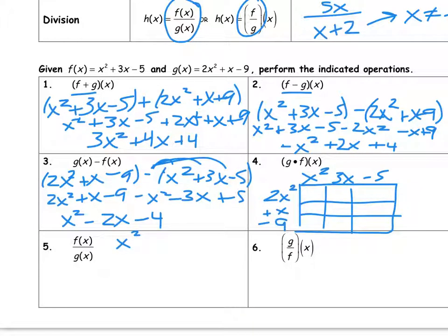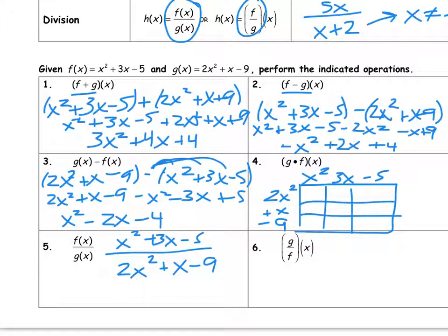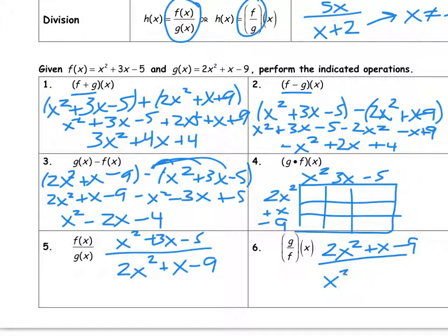For division, f of x is x squared plus 3x minus 5 over 2x squared plus x minus 9, and we don't want the denominator equal to 0. I don't immediately see something that factors here, so we're going to move on. I'm not going to give you something crazy in the denominator if I'm wanting you to check whether anything makes it equal to 0.